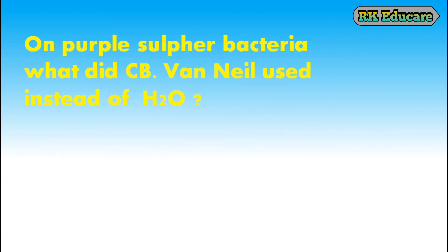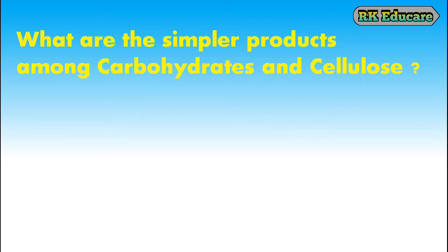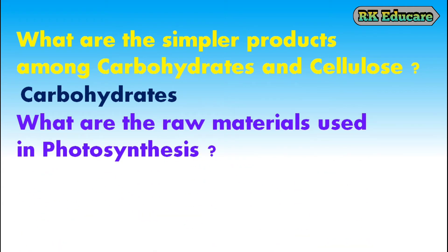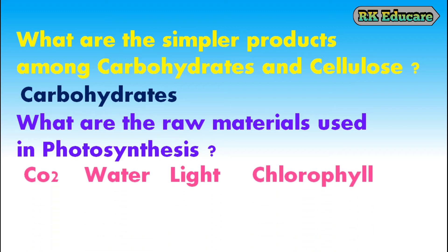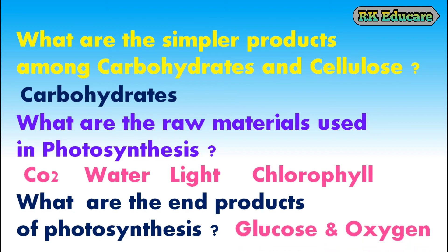On purple sulfur bacteria, what did C.B. van Niel use instead of water? Instead of water, C.B. van Niel used hydrogen sulfide (H₂S) on purple sulfur bacteria. What are the raw materials used in photosynthesis? Carbon dioxide, water, light and chlorophyll are the raw materials used in photosynthesis. What are the end products of photosynthesis? Glucose, oxygen and water are the end products of photosynthesis.